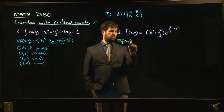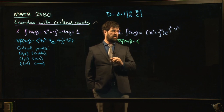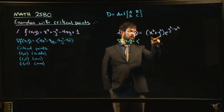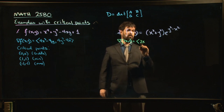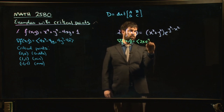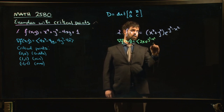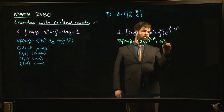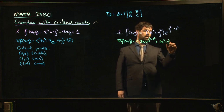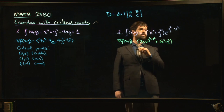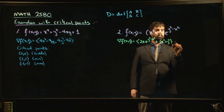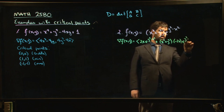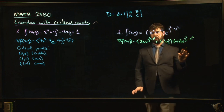So we find our gradient vector. We have to take a little bit more effort this time — we need to use the product rule. The derivative with respect to x is 2x times e^(y²−x²) plus x²+y² times −2x e^(y²−x²). And that's just the x-derivative.